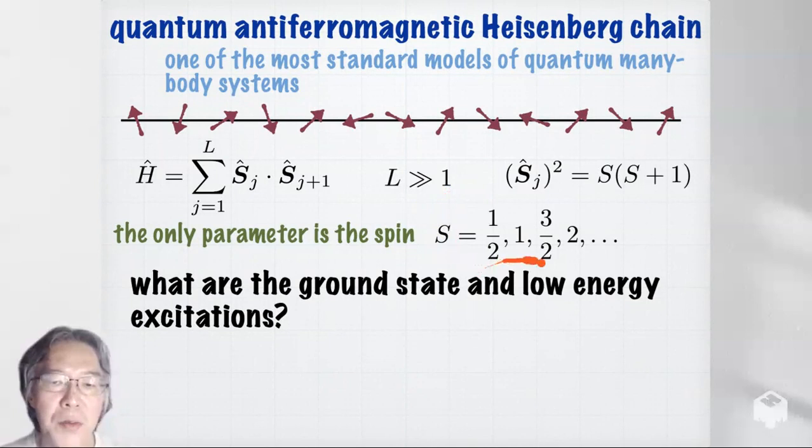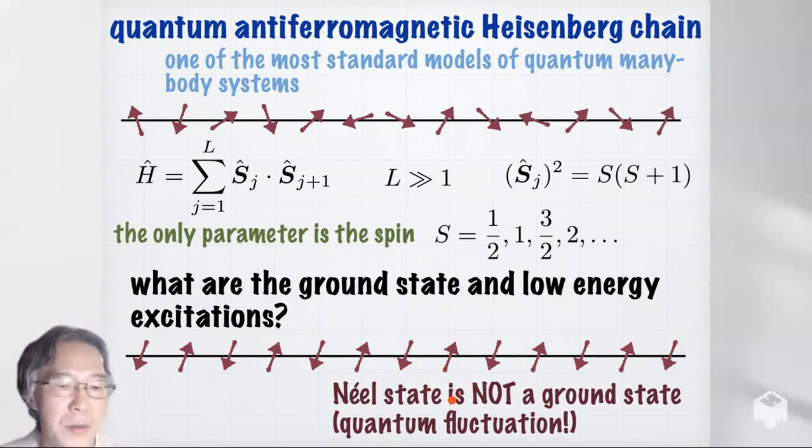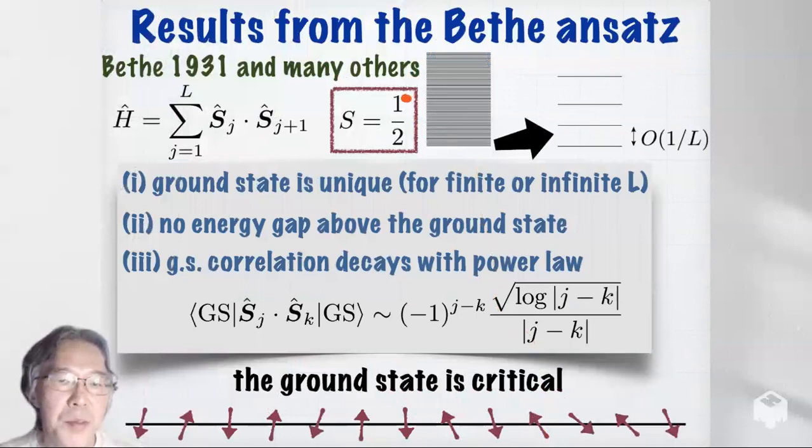The only parameter of this model is the spin quantum number S, which can be one-half, one, three-halves, and so on. We ask what the ground state and low-energy excitations are. Even though this is an anti-ferromagnetic system, the Néel state — in which spins point in opposite directions — is not a ground state; it's not even an energy eigenstate. So quantum fluctuation is strong in this system.